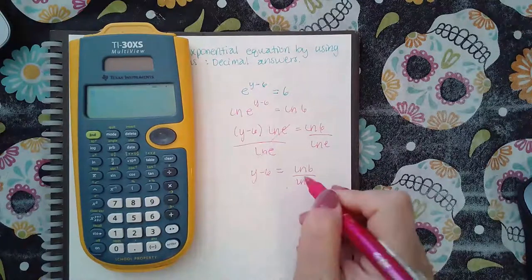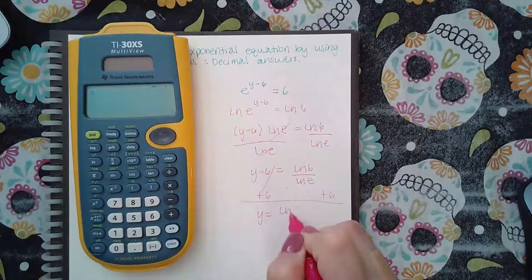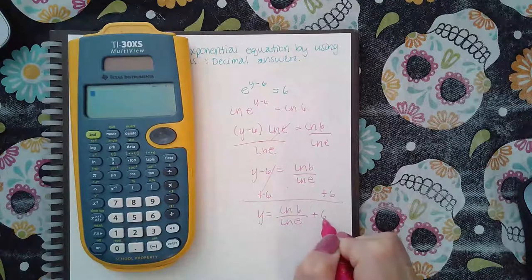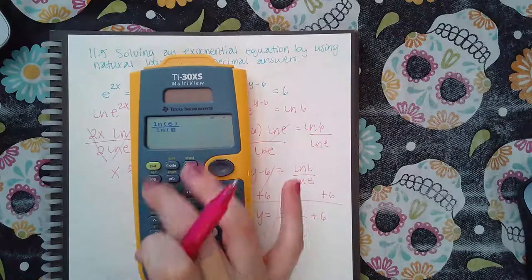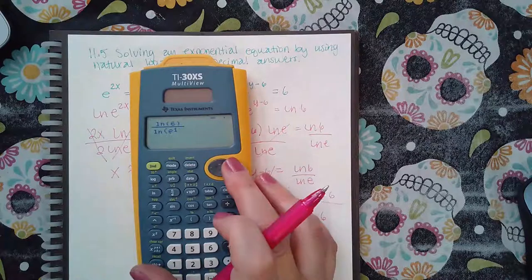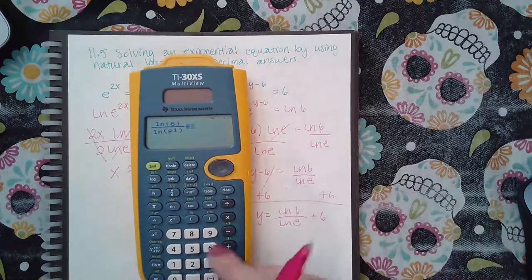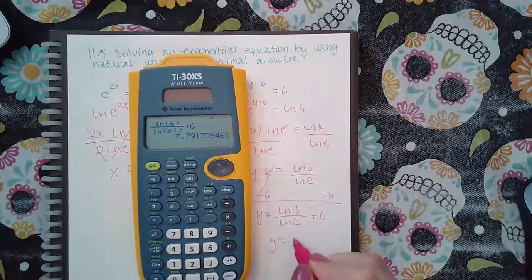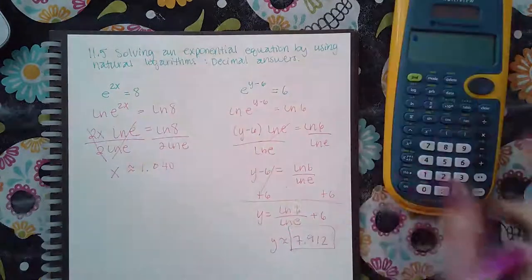Then add 6 to both sides, so you get y equals ln(6) over ln(e) plus 6. So the fraction ln(6) over ln(e) - I can't just put e, so 1 power, which is equivalent to just e - and then plus 6. So I get y is approximately 7.912, and that's pretty much it for this topic.